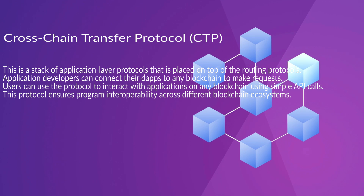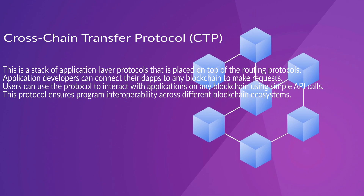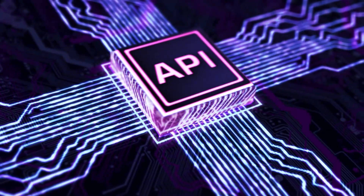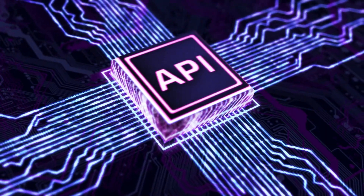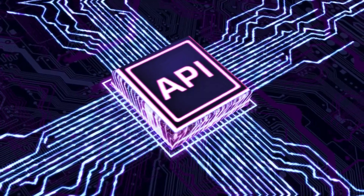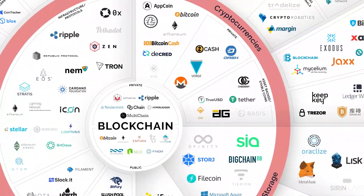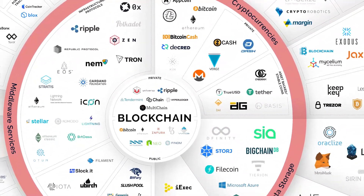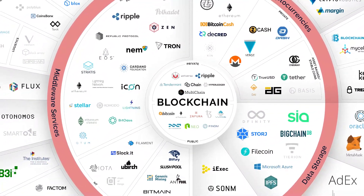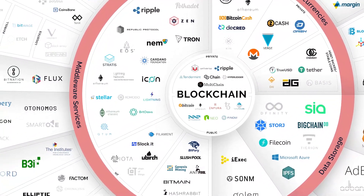Crosschain Transfer Protocol: This is a stack of application layer protocols that is placed on top of the routing protocols. Application developers can connect their DApps to any blockchain to make requests. Users can use the protocol to interact with the applications on any blockchain using simple API calls. This protocol ensures program interoperability across different blockchain ecosystems.